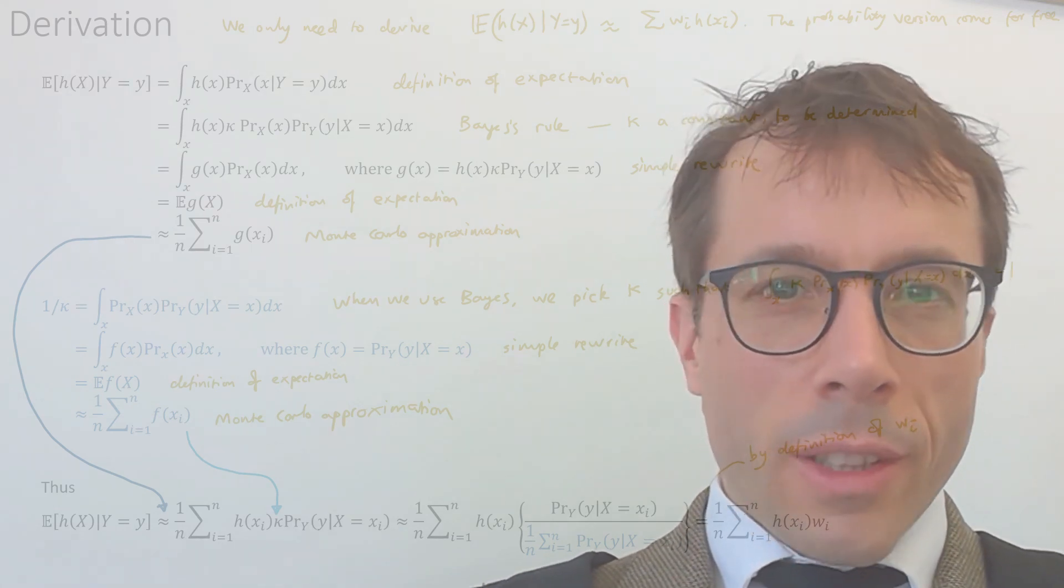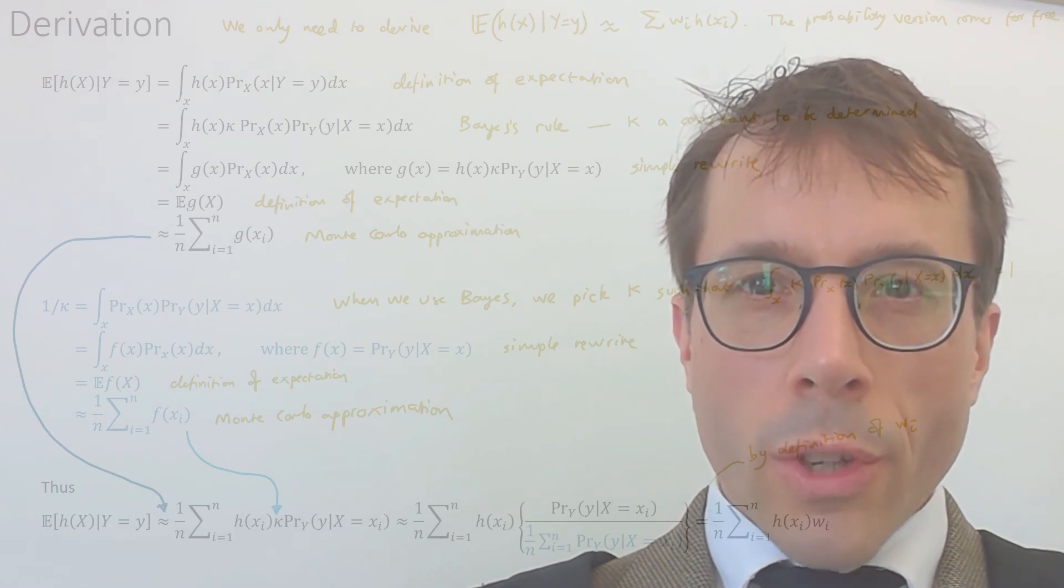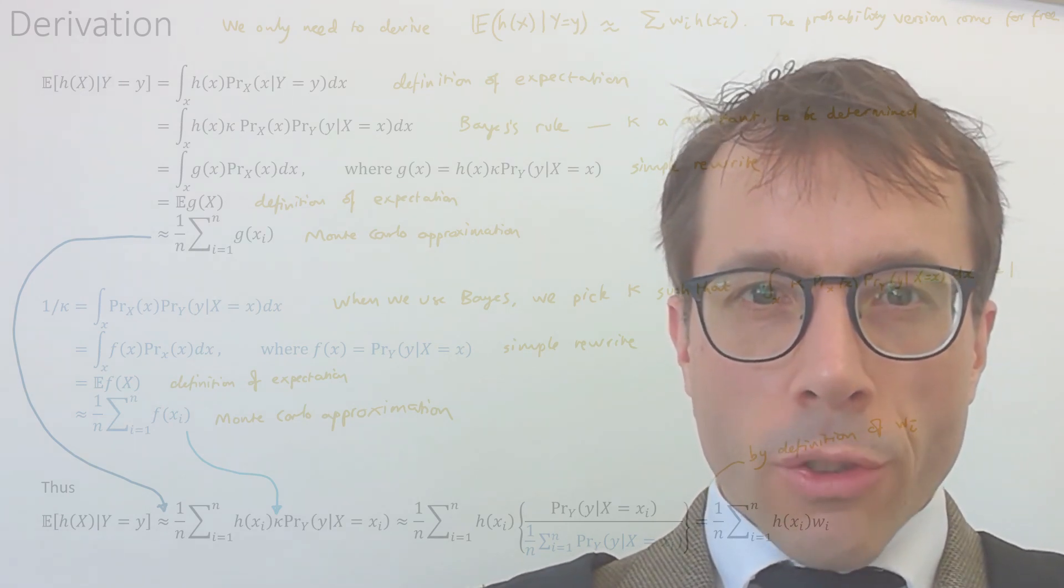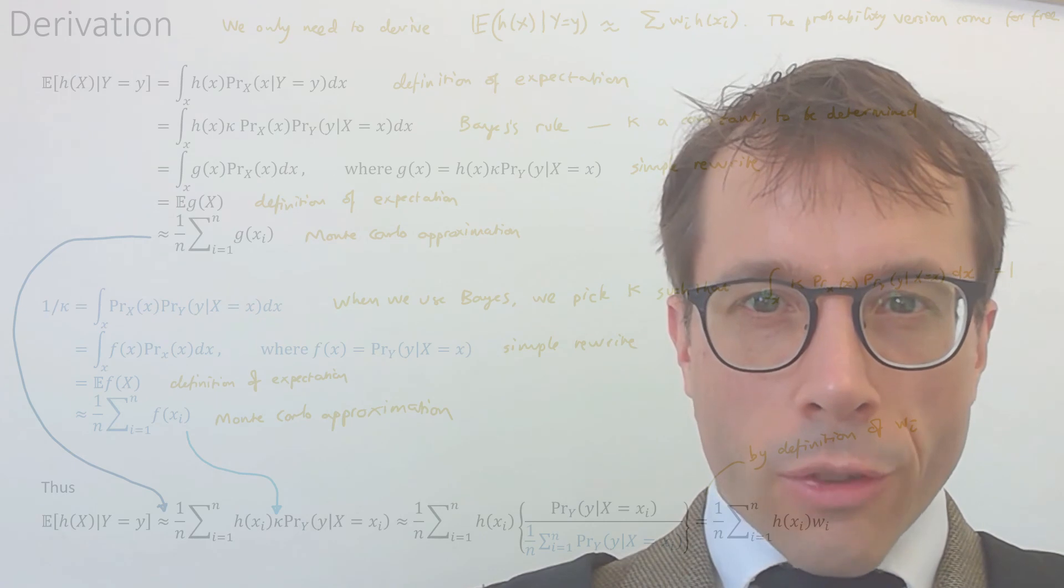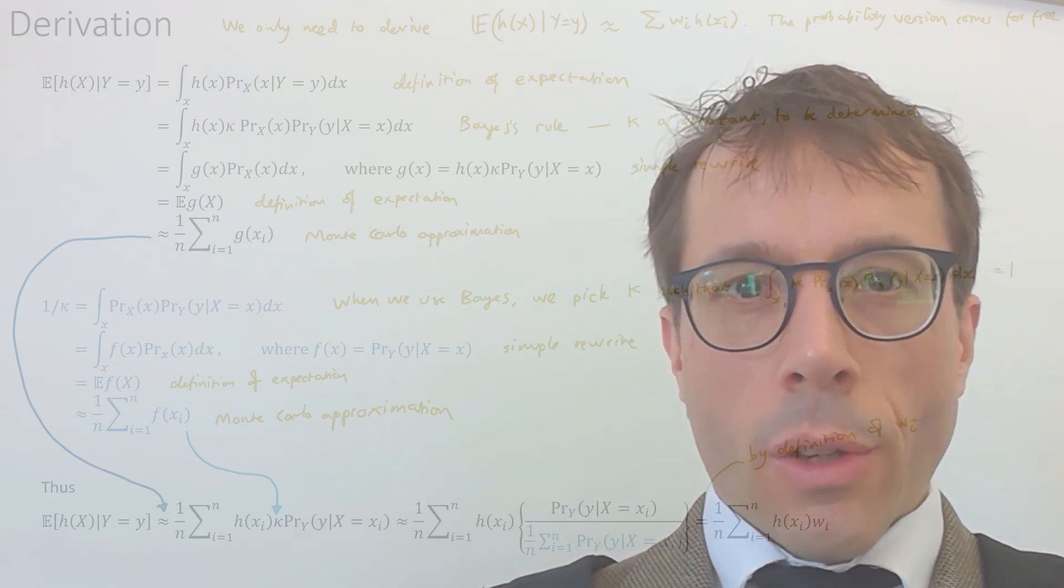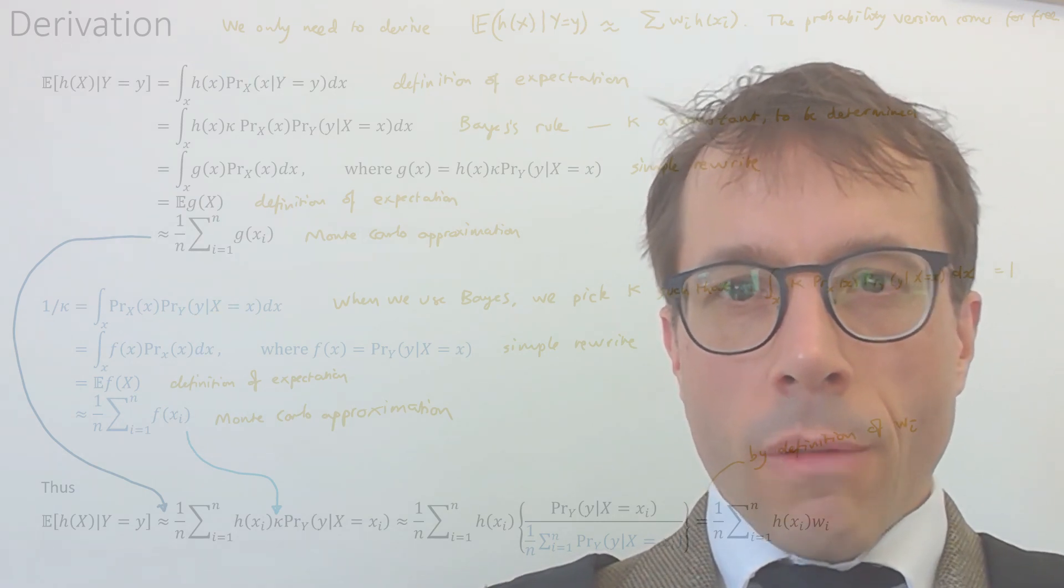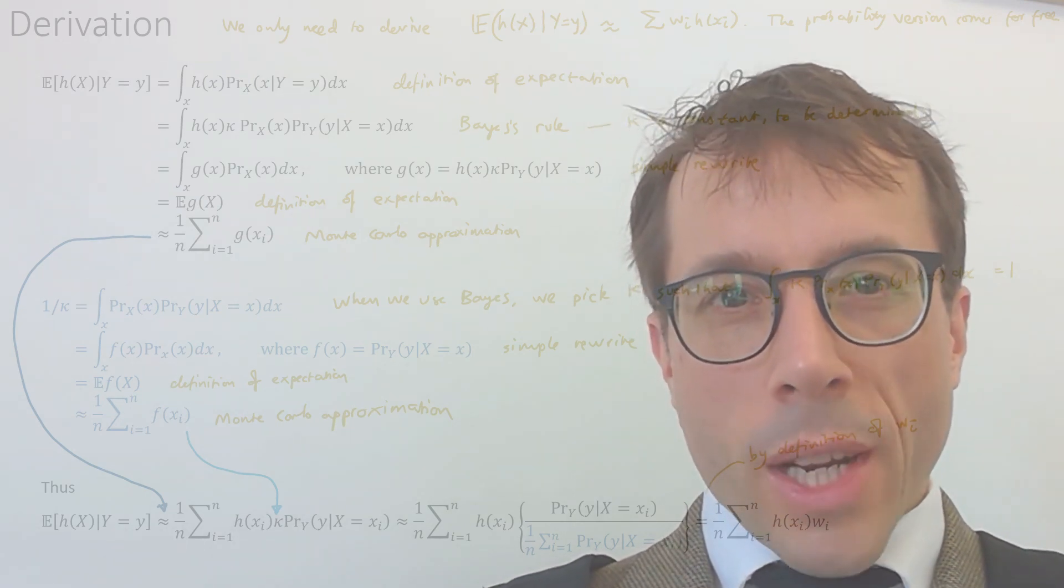By the way, it's completely impossible to take in a proof like this just by looking at it. So, what you should do now is write out the two expressions on the left, the conditional expectation and the formula for 1 on kappa, and then turn off the screen and see if you can reproduce all the argument. Videos are great for watching, but you learn maths by doing.